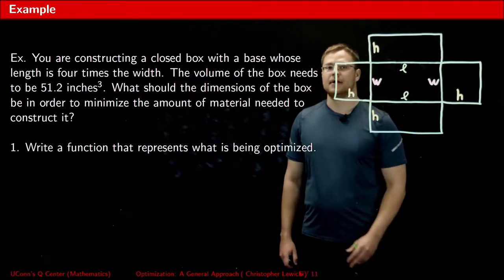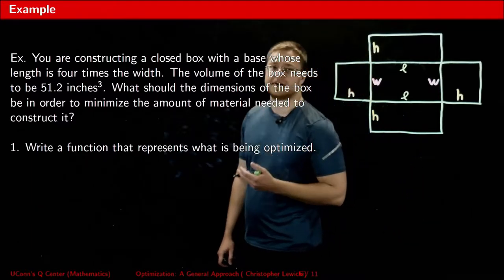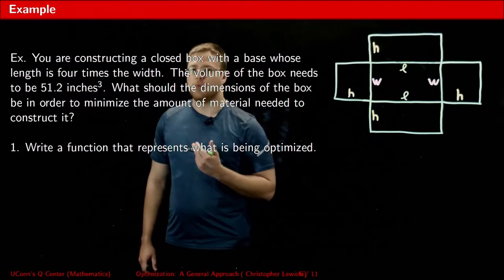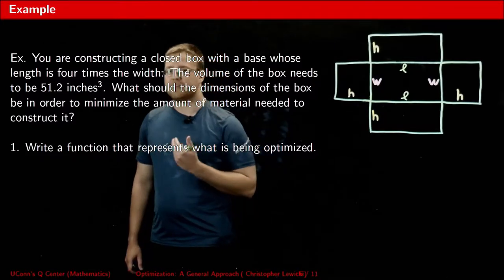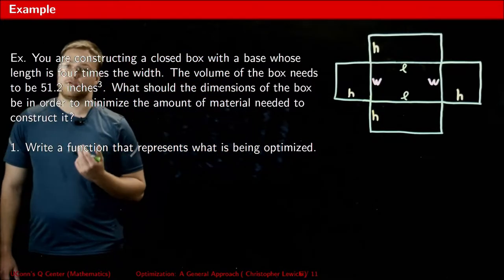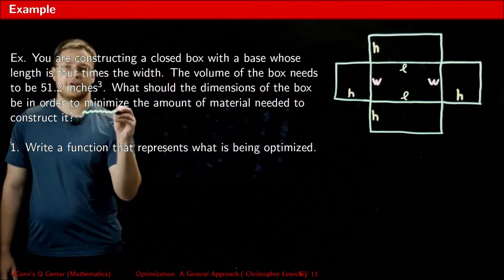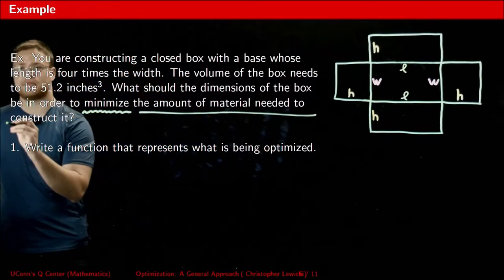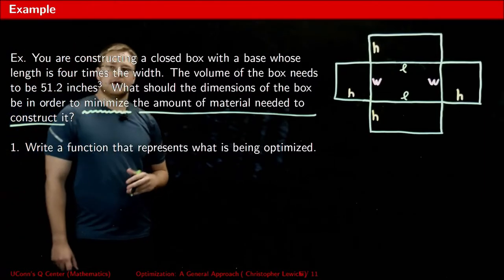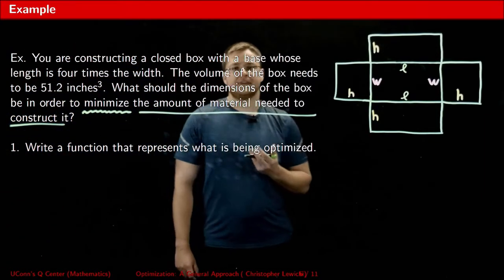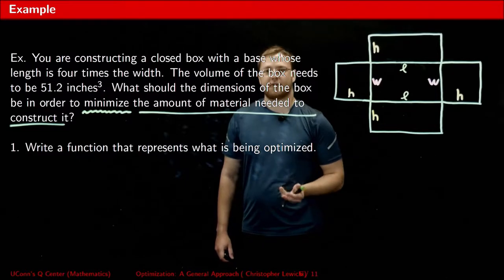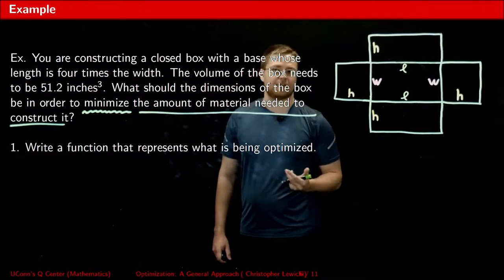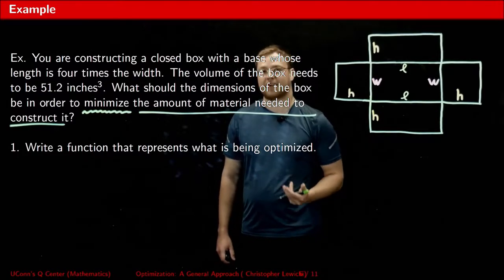Let's go through the five-step process step-by-step to help us solve this problem. Basically, what's going on here is we're trying to construct a closed box. The first question we have to be able to answer is, what exactly are we trying to optimize here? As I read through this and I look for the answer to that question, the word that sticks out to me is the word minimize. In this problem, we're trying to minimize the amount of material needed to construct the box. The material needed to construct a box is what constitutes its surface area. So what I'm thinking is, since we're trying to minimize the amount of material needed to construct the box, we need to minimize the surface area of this box.